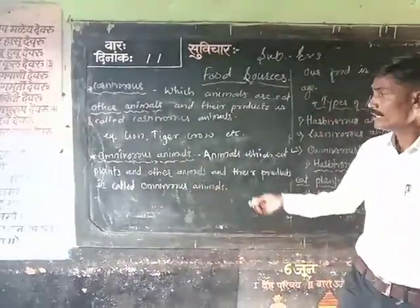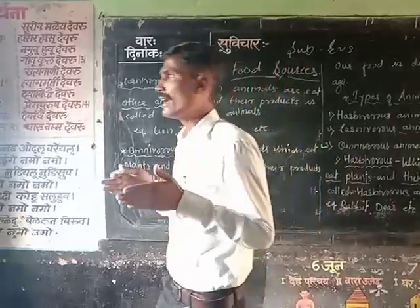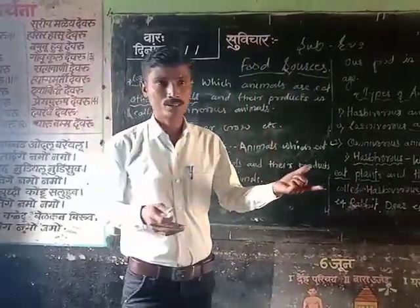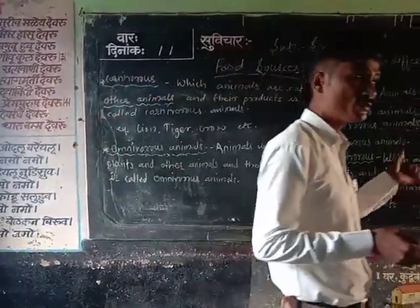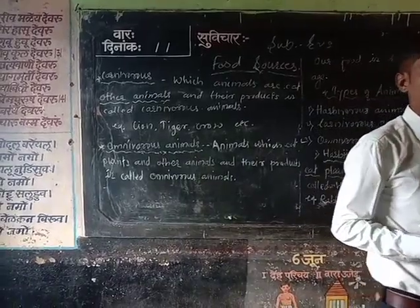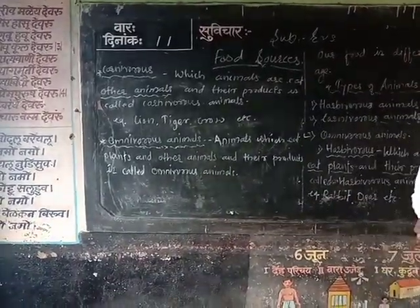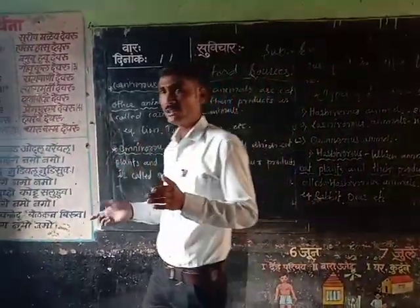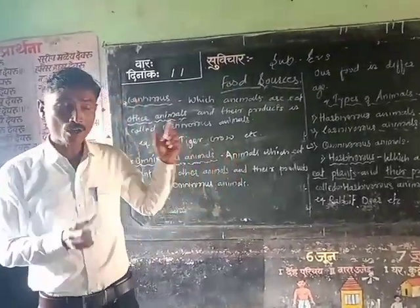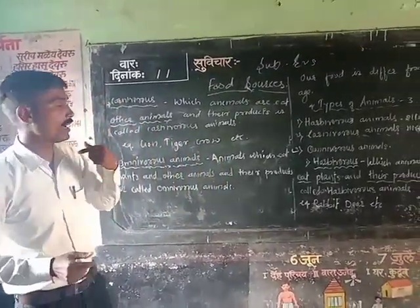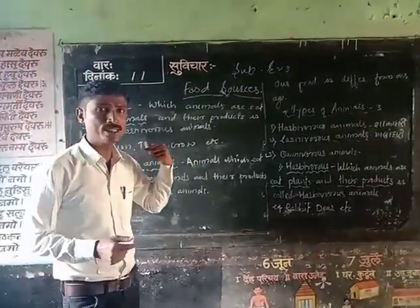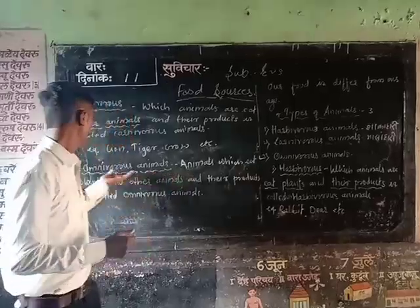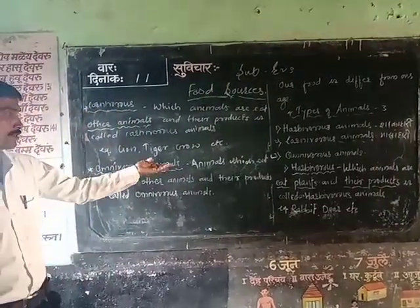Because those animals eat other animals as well as plants also. The plants as well as other animals — they eat both. And also they eat their products. Animals which eat plants and other animals and their products are called omnivorous animals.